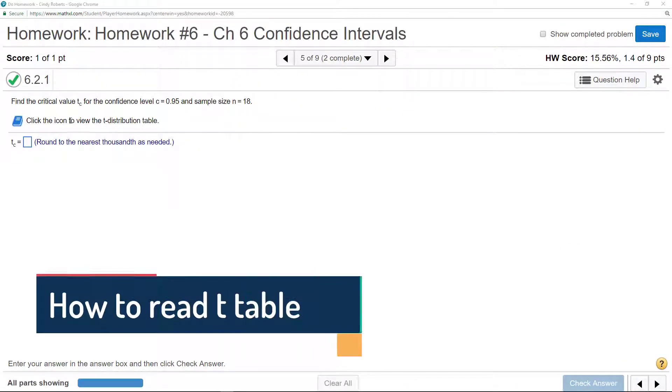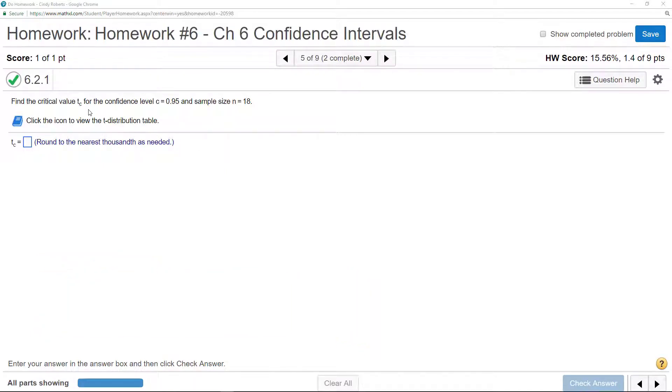This shows how to find critical values in the t-table. How do you know when to use the t-table? Remember in our other examples, we did not have the population standard deviation.